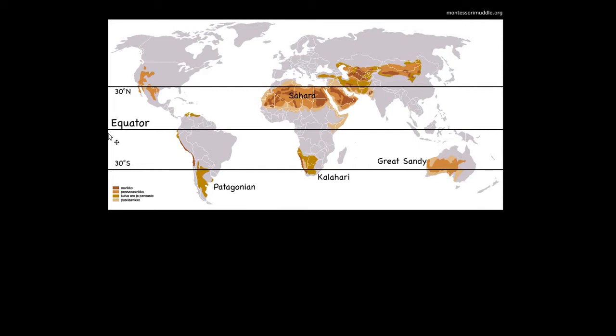It comes down to large-scale circulation patterns of the atmosphere. Specifically, circulation patterns that we call Hadley cells. And so that's what we're going to be exploring and discussing today. Hadley cells, how they form, and why they're responsible for deserts being at 30 degrees north and 30 degrees south.